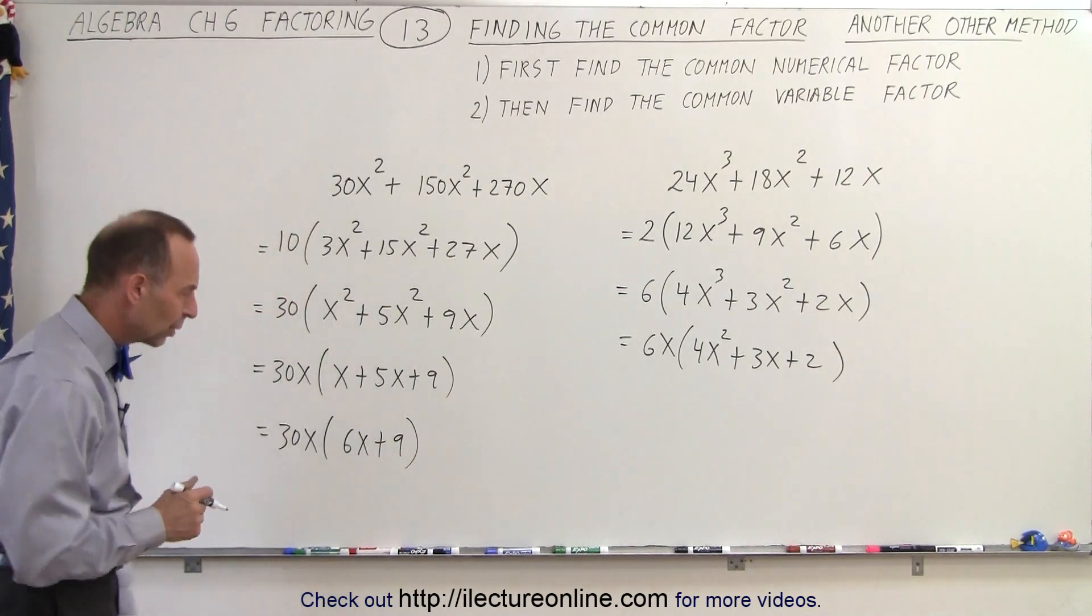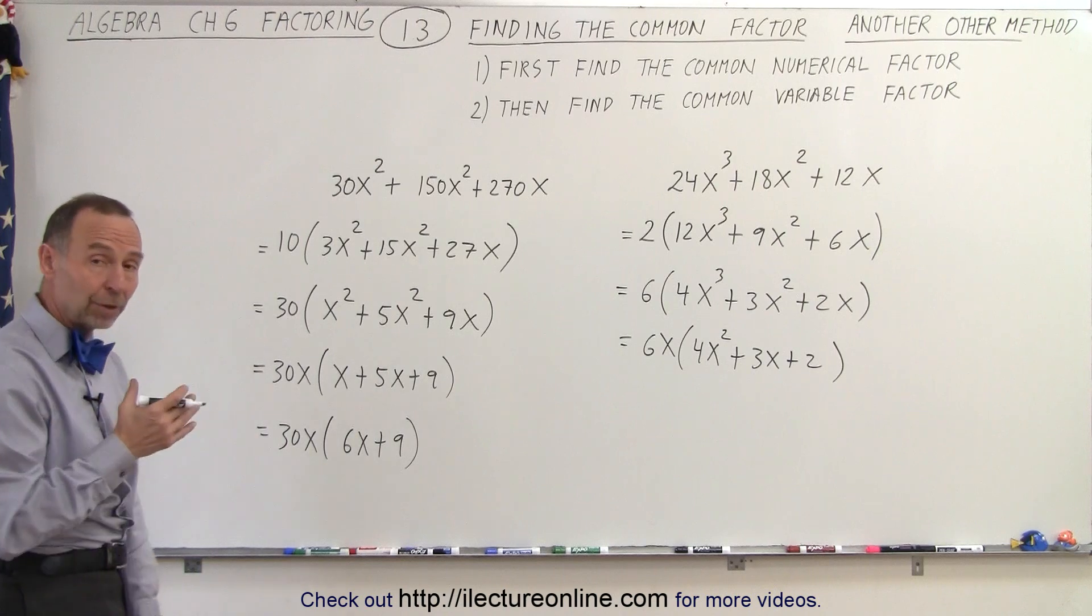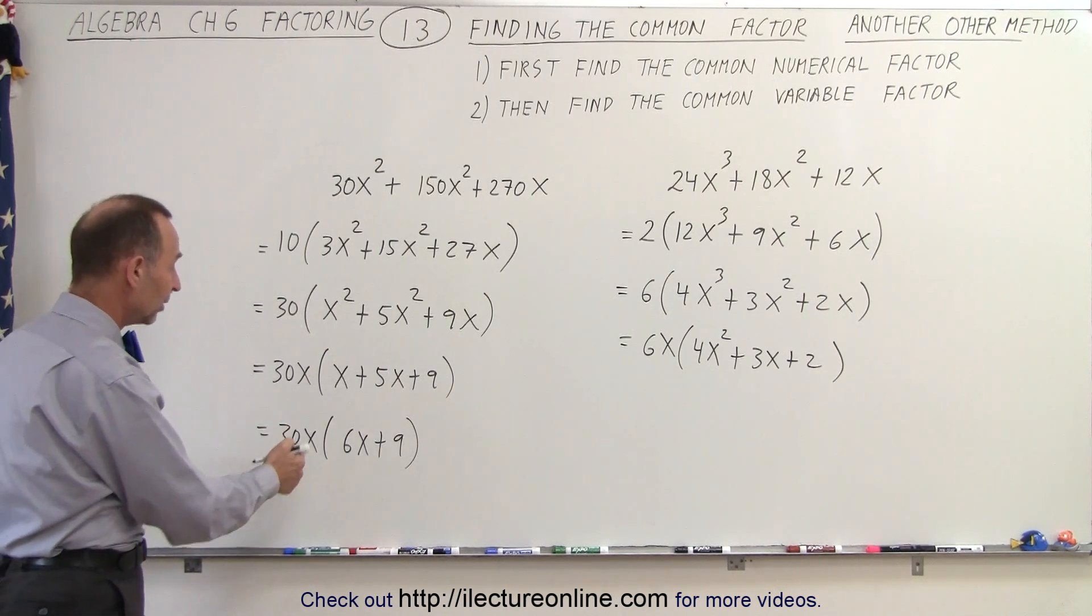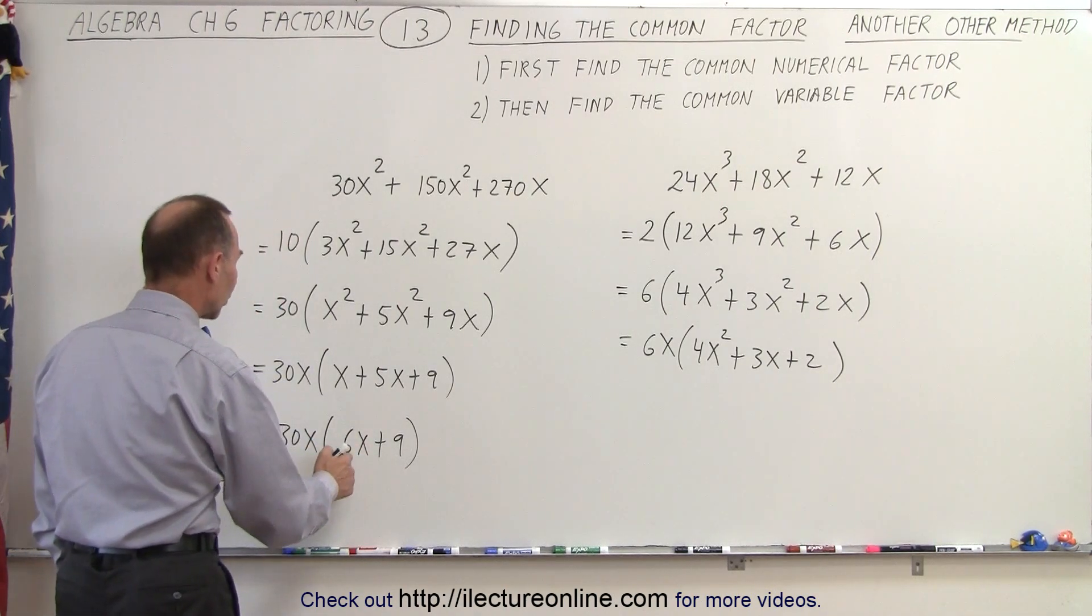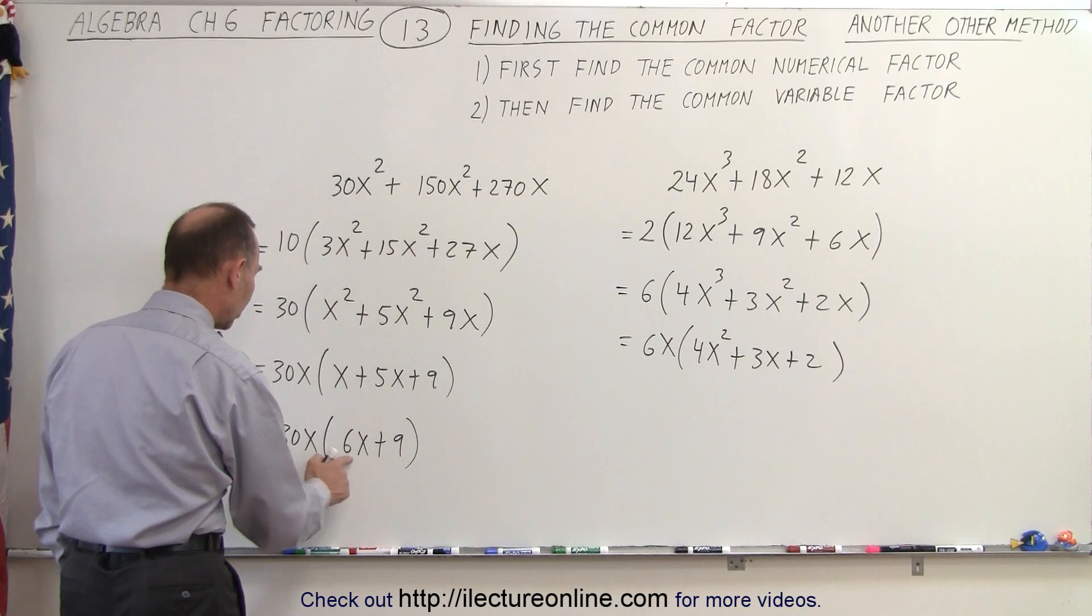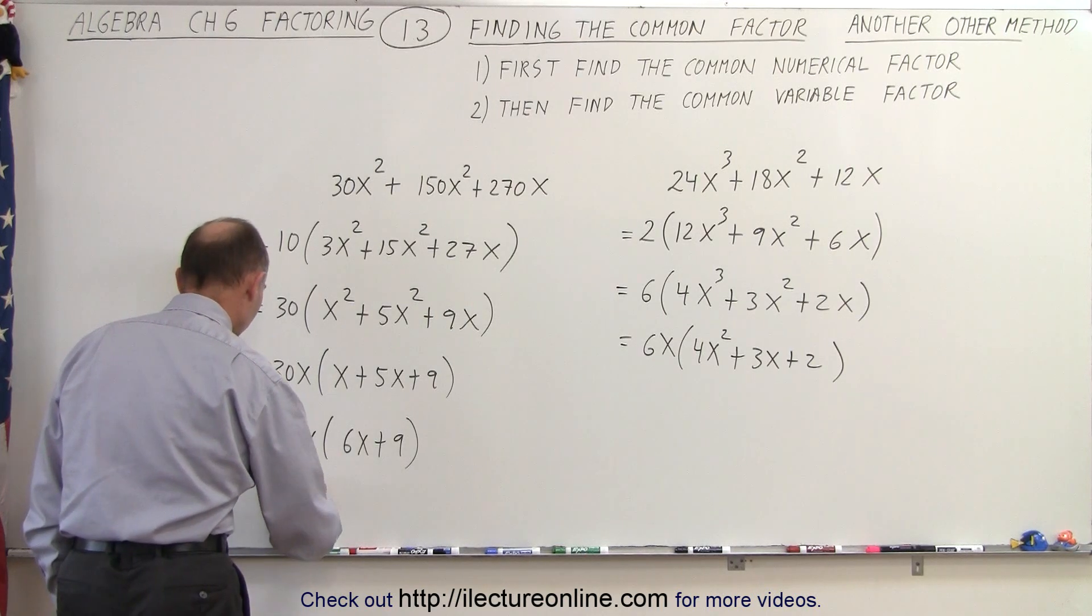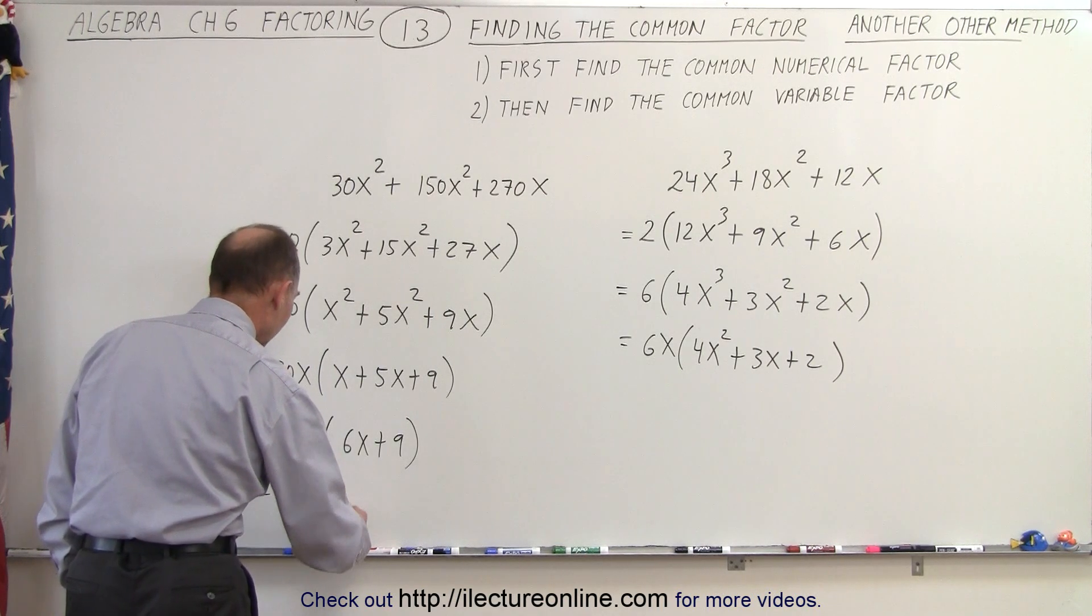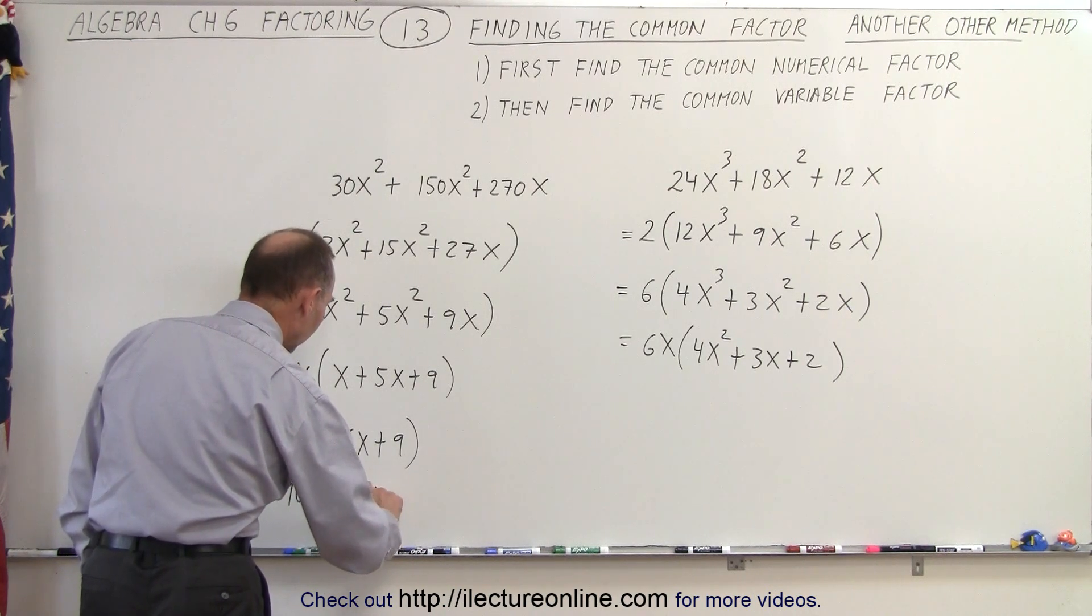Now when I do that, realize, well wait a minute, I can pull out another common factor because now the common factor is 3. So 3 times 30 is 90, so this can be written as 90x times (2x + 3).